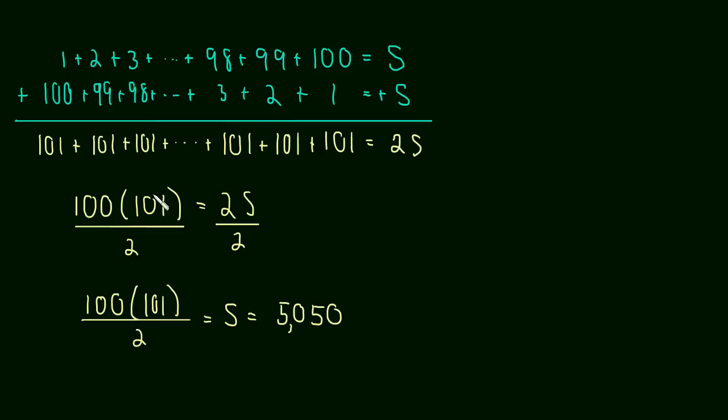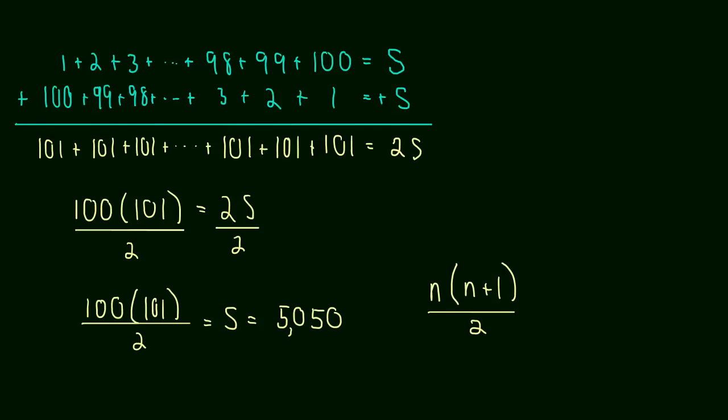So this seems like a nifty little trick. And in fact, it works for any number. So what could our formula be? Well, the number we had was 100. So let's call that, instead of 100, let's call it n. And then we multiplied by 100 plus 1. So let's say n plus 1. And then we divided by 2. And this is the formula for finding the sum of any number.